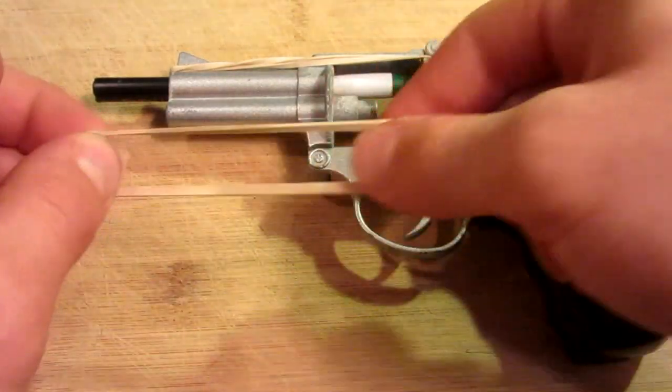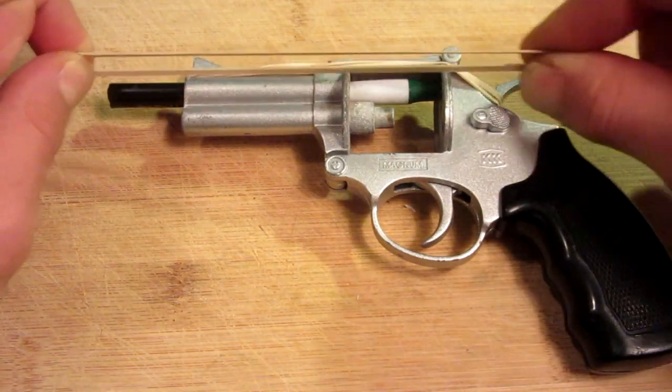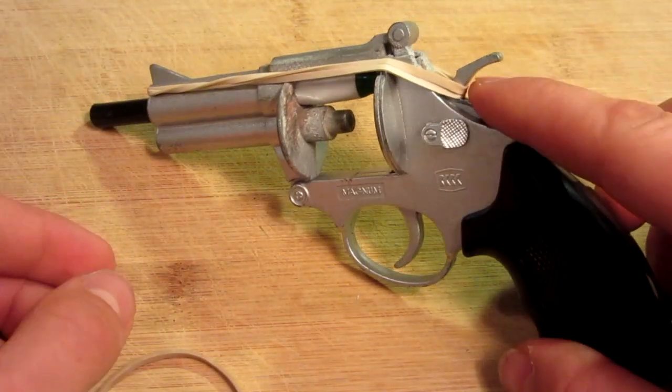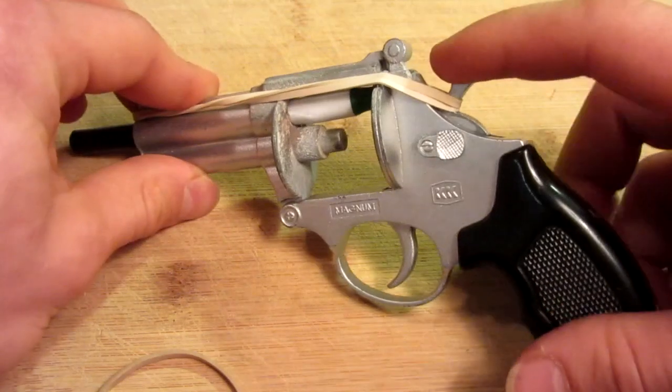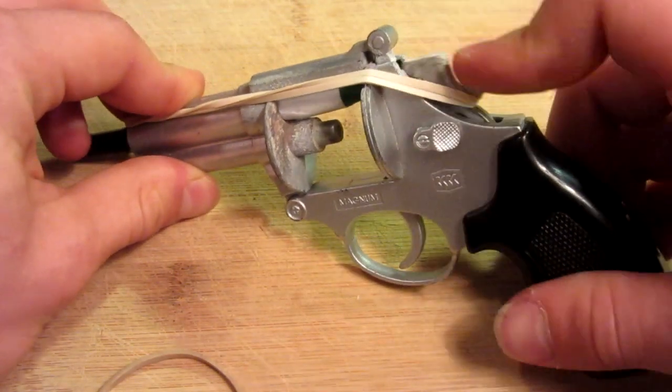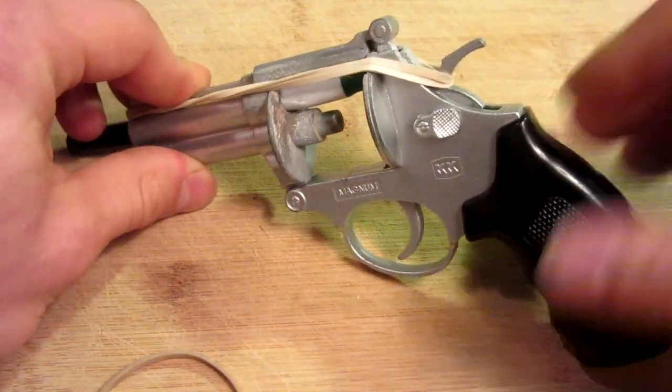To finish off the gun, two elastics were added to the top between the hammer and the tip of the barrel, to make the hammer action significantly more powerful.